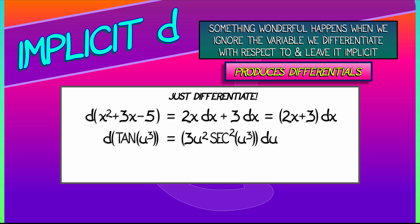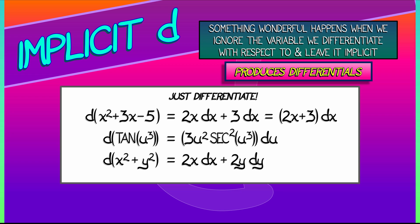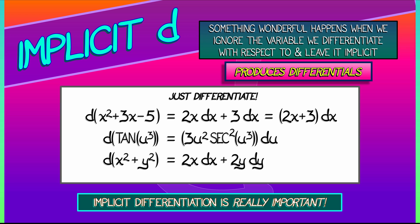Now, where this operator really becomes useful is when you have more than one variable involved. Consider x squared plus y squared. We can simply differentiate that entire expression. What is the derivative of x squared? It's 2x dx. What's the derivative of y squared? It's 2y dy. The summation rule for differentiation means that the derivative of x squared plus y squared is 2x dx plus 2y dy. And that is more significant than it first appears.